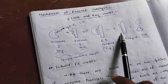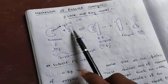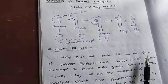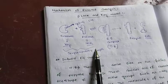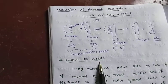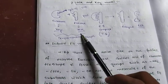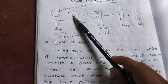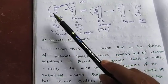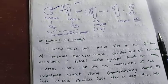In the induced fit model used in chemistry, the enzyme binds to the substrate using functional groups such as the NH2 group, CO2H group, SH group, and OH group. This binding determines the shape and specificity of the enzyme active site.